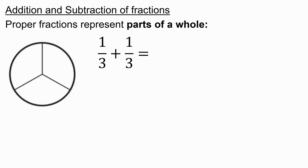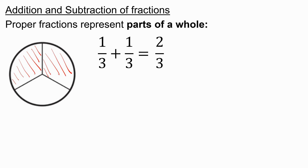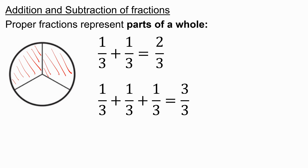For example, one third plus one third will be as though I shade in one third and then another third, and in total I've shaded in two thirds — two parts out of the three parts making up the whole. Similarly, if I did one third plus one third plus one third, that would be like shading in all three thirds. In total, I've shaded in three out of three, which is also one whole or one.